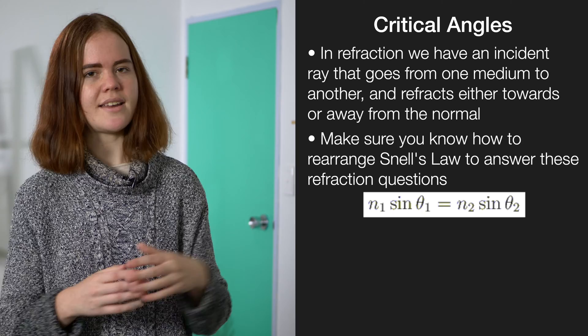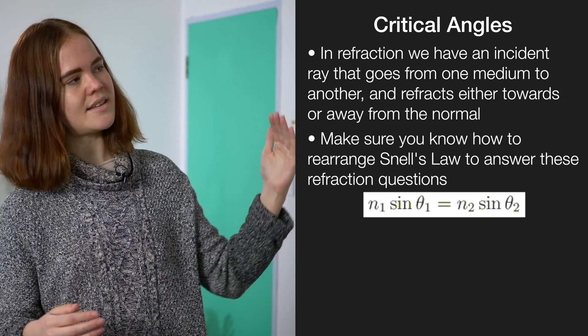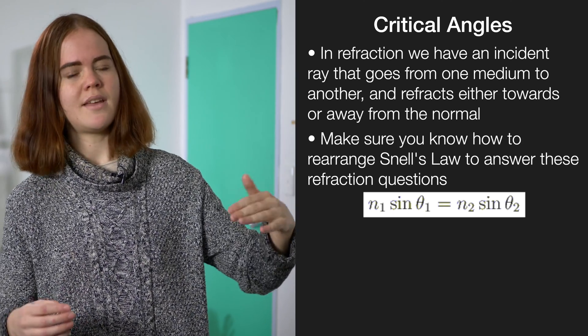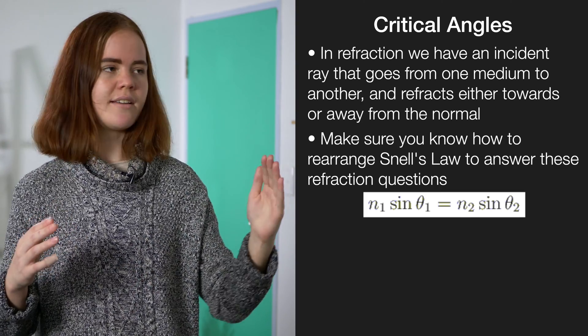Total internal reflection is when the light doesn't just refract between the two media, instead it's reflected inside the first medium. And right before this happens, we have what's called the critical angle.